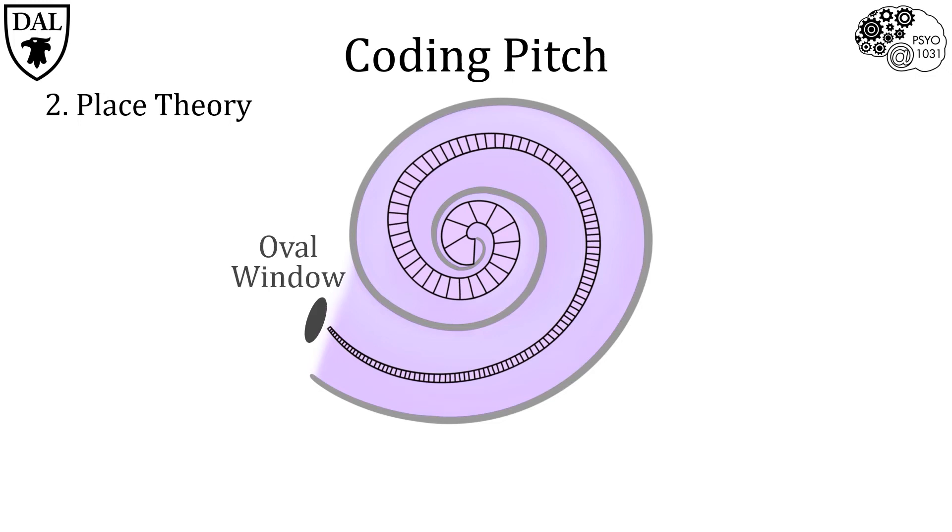Closer to the oval window, the basilar membrane is much more narrow and stiff. While further away from the oval window, near the center of the cochlear spiral, the basilar membrane is wider and more flexible. These different properties of the basilar membrane determine how different locations react to different sound wave frequencies.